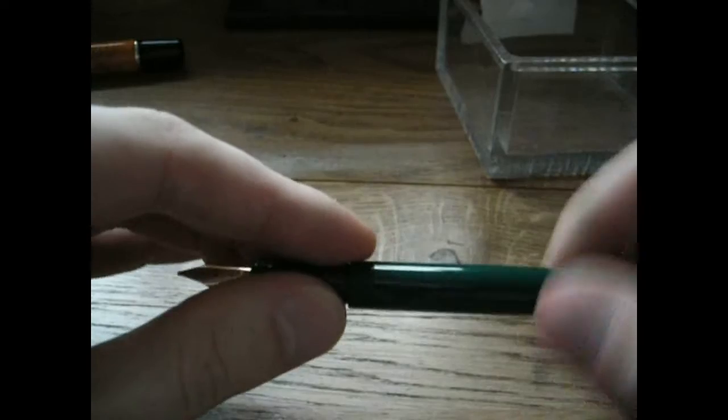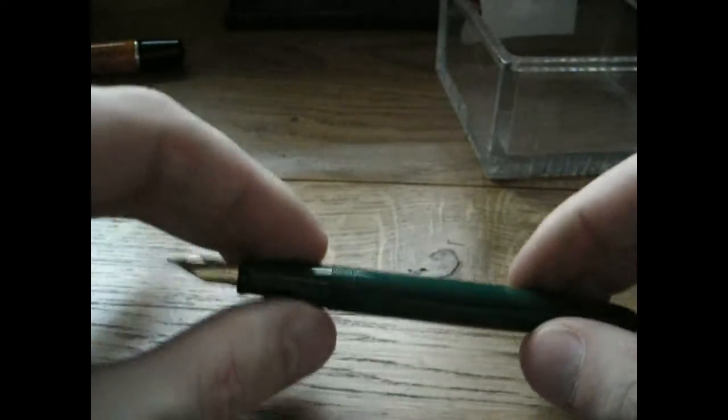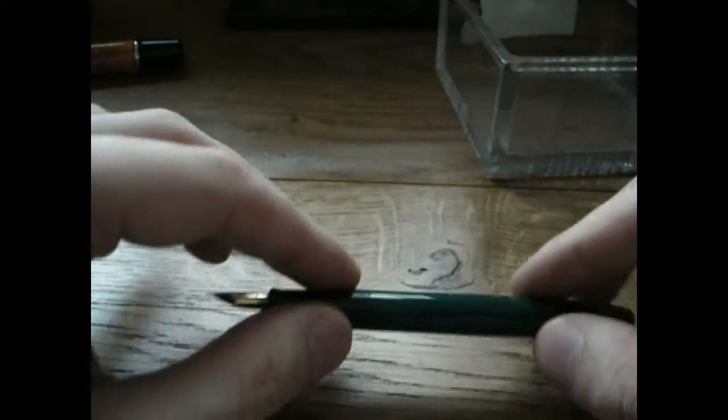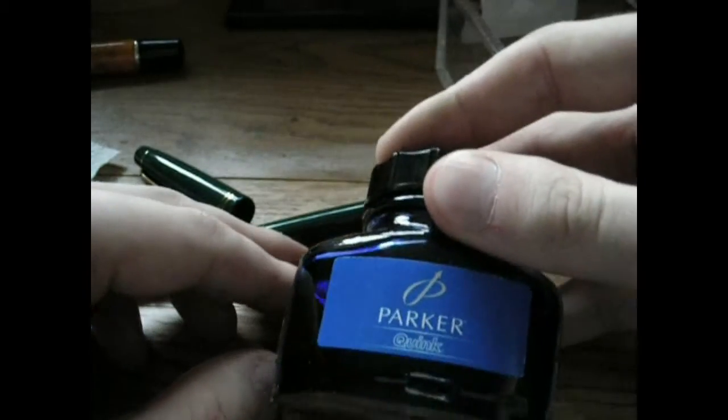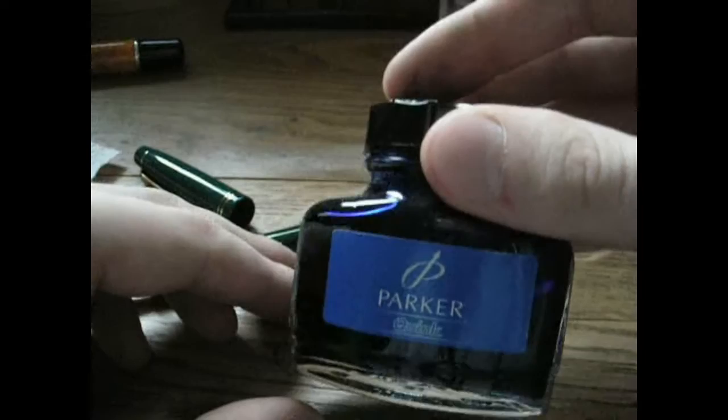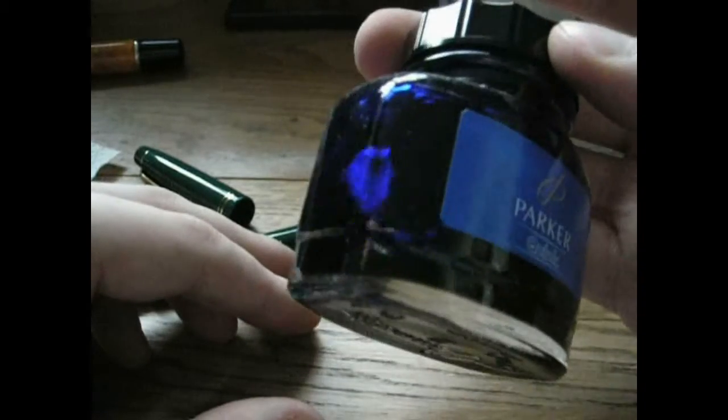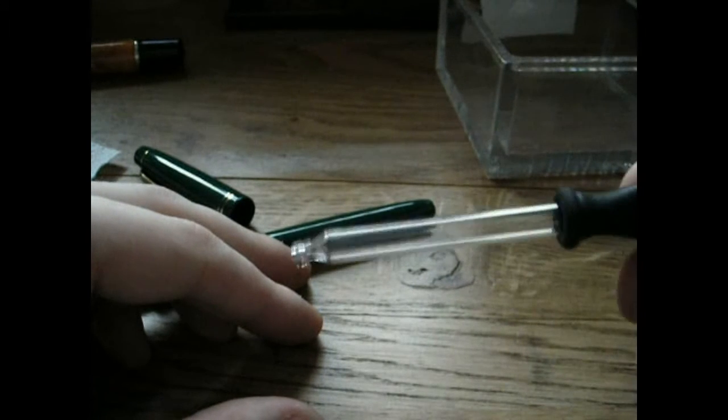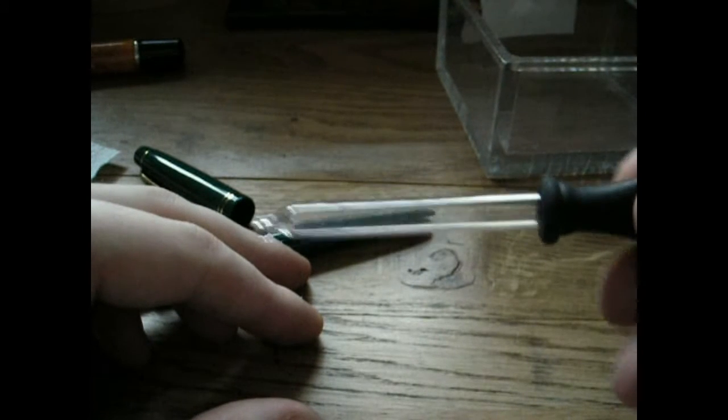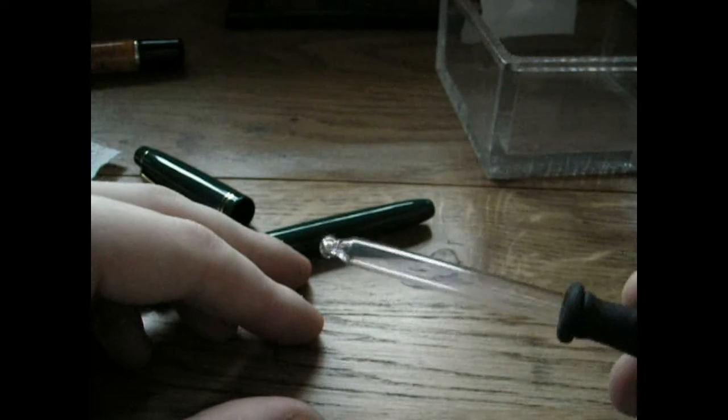So, what are you going to need? First of all, you'll need a pen, clearly. Secondly, a bottle of ink. This is Parker Quink. I don't like this ink that much, which is why I use it, because I have a large bottle of it and I have to get rid of it. An eyedropper is kind of useful when you're doing an eyedropper conversion. You could also use an ink syringe, by the way.